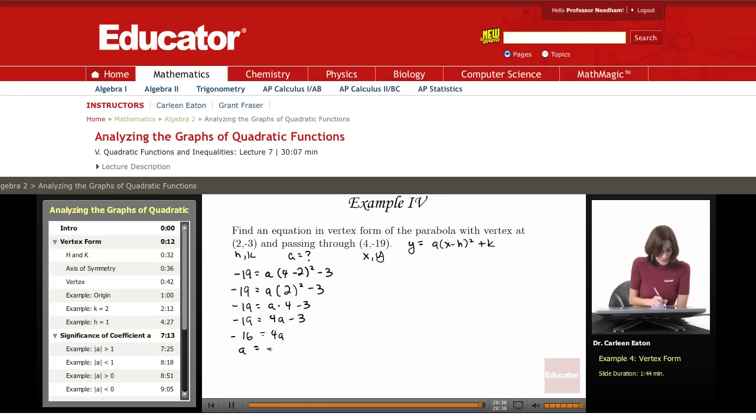Therefore, a equals negative 4. Now that I've found a, I just go back in here and write this as y equals negative 4 times x minus h squared plus k, where h is 2, and k is negative 3.